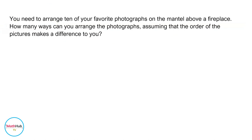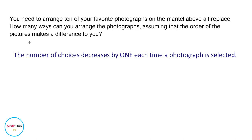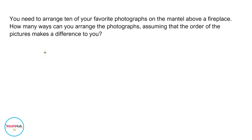You need to arrange ten of your favorite photographs on the mantel above a fireplace. How many different ways can you arrange the photographs, assuming that the order of the pictures makes a difference to you? Notice that in this problem the order of arrangement is important, so this is a problem on permutation. The number of choices decreases by one each time a photograph is selected. We have ten spots for the ten different photographs, so for the first spot we have ten choices.